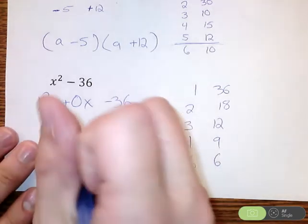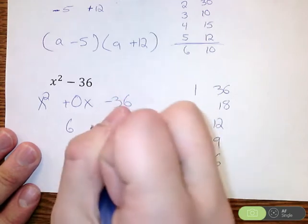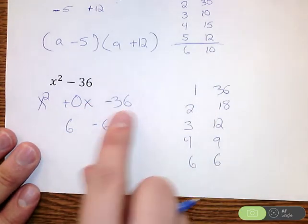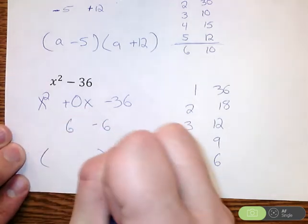Well, it is down here. We're going to have 6 and 6. So if I make one positive and one negative, 6 times negative 6 is negative 36, but 6 minus 6 is 0. So that is my two numbers I need.